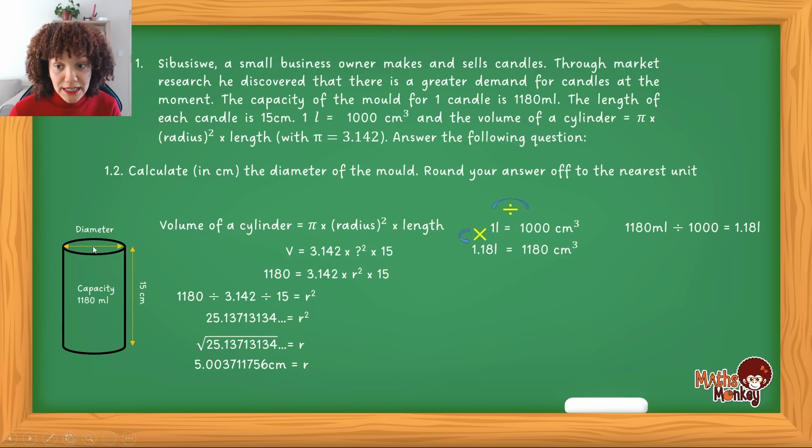Now I know that the radius is from the center to the circumference. So if I want to calculate the diameter, I just take this radius formula now and multiply it by 2. And that will give me 10.0074, etc. And if I round this off to the context of the question, or I round it off to two decimal places, my answer will be 10 centimeters.